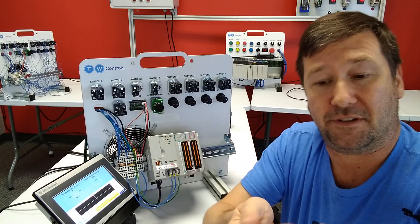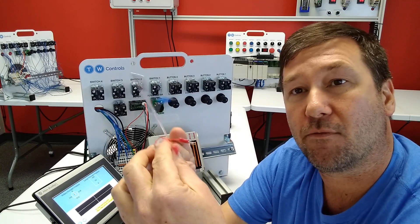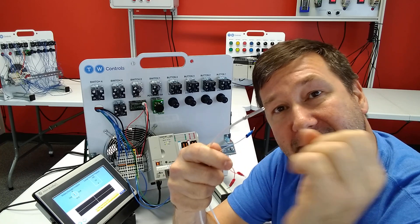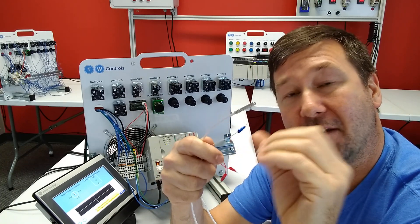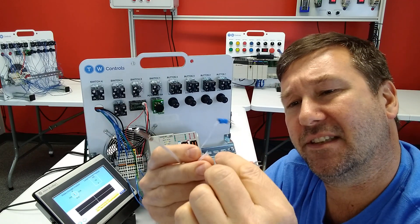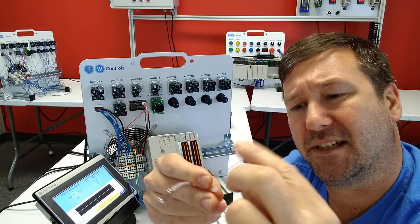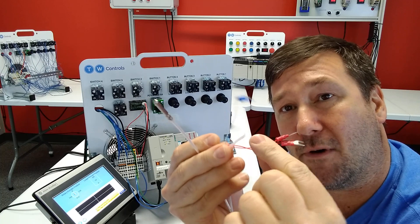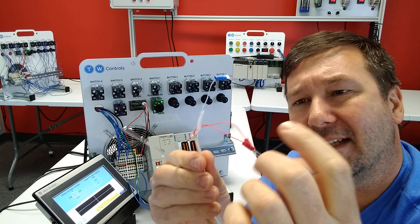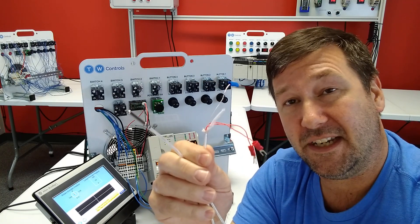Now an RTD sensor, on the other hand, works off of resistance. So it has a piece of material in the end of it that as the temperature changes, the resistance of it changes. And it can be really confusing looking at the wires coming out of the end of it because we have two red wires in this case and we have a clear wire. And so this is called a three-wire RTD.